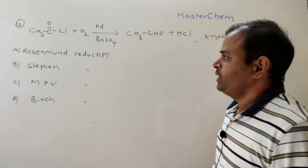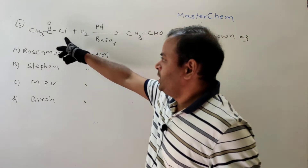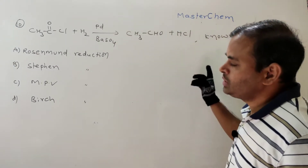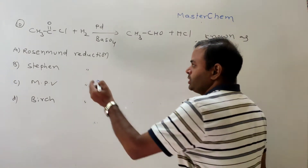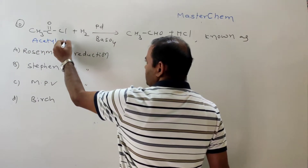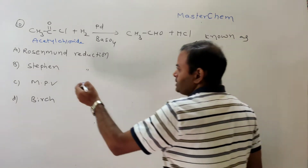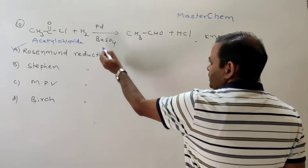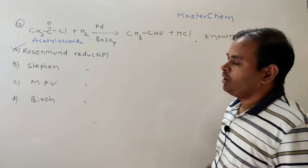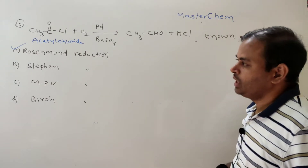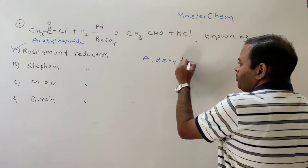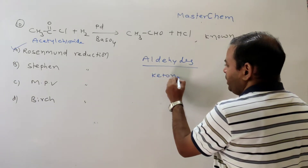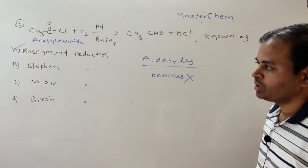Question 10: CH₃COCl plus H₂ in the presence of palladium and BaSO₄ gives CH₃CHO (acetaldehyde) plus HCl. This reaction is known as Rosenmund reduction — a very important name reaction. Acetyl chloride on hydrogenation in the presence of palladium and BaSO₄ gives acetaldehyde. Rosenmund reduction is exclusive for the preparation of aldehydes only; ketones cannot be prepared by this method.